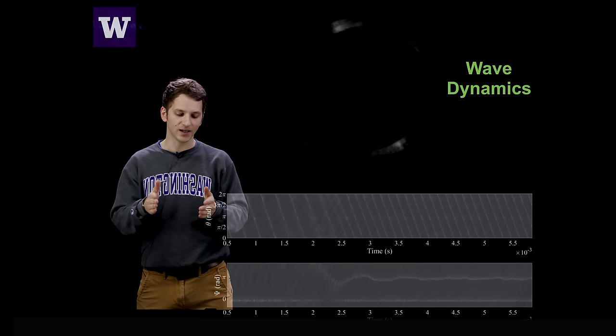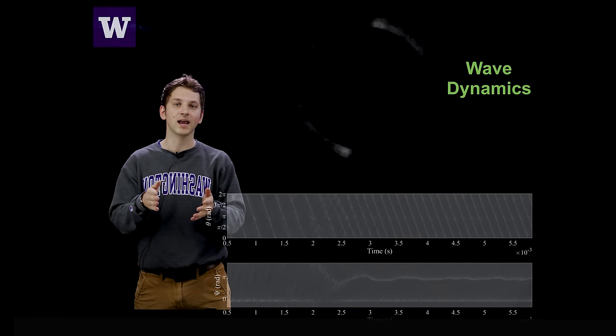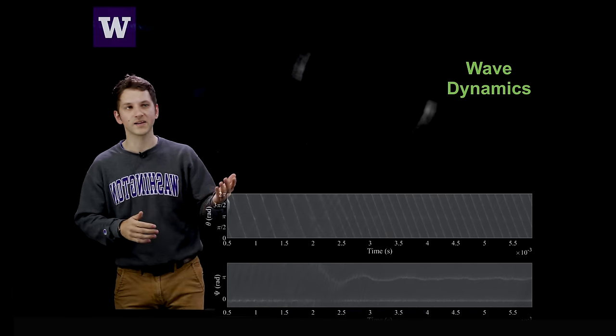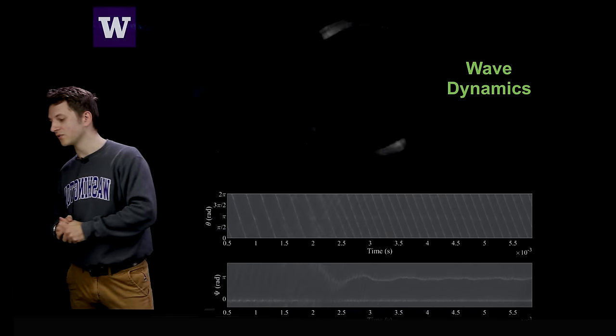And through time, these different waves approach a nice stable phase difference between them. That's a phase difference of pi radians or 180 degrees.